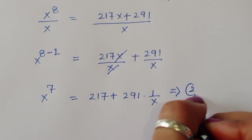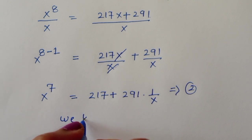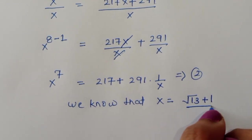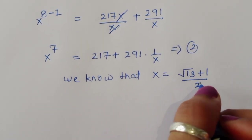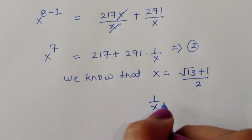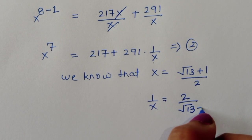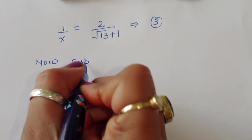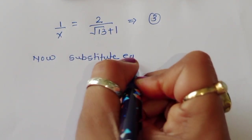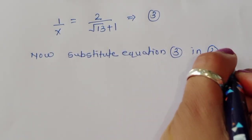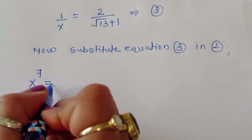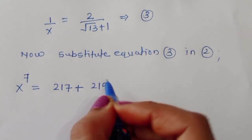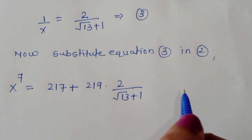We know that x = (√13 + 1)/2, so 1/x = 2/(√13 + 1). This is equation 3. Substituting equation 3 into equation 2: x⁷ = 217 + 291 · 2/(√13 + 1).